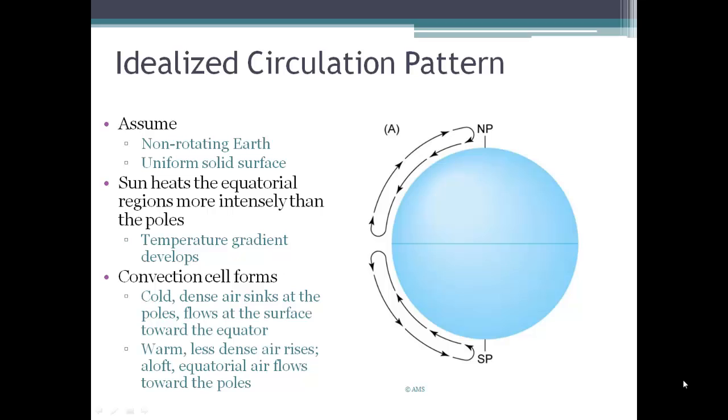In an idealized Earth that does not spin around, the distribution of energy would take place like you see here. The equator is warmer than the poles, so the warmer air would rise up and make its way poleward where it would cool off and sink, and then the colder air would move to complete the circulation cell.